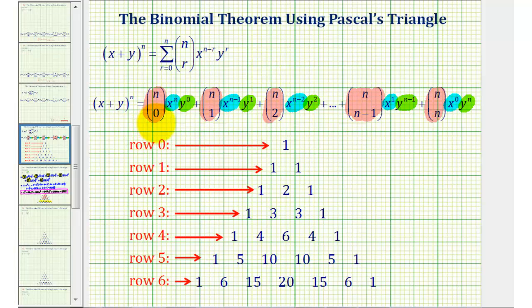Notice if we take a look at each term in the expansion, each term has a factor that's a combination, highlighted here in pink, as well as a factor involving x, the first term in the binomial, and a factor of y from the second term of the binomial.